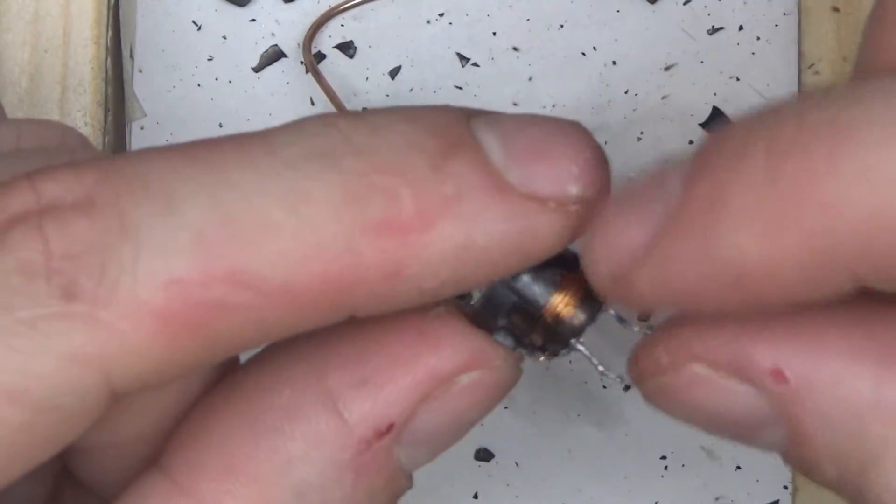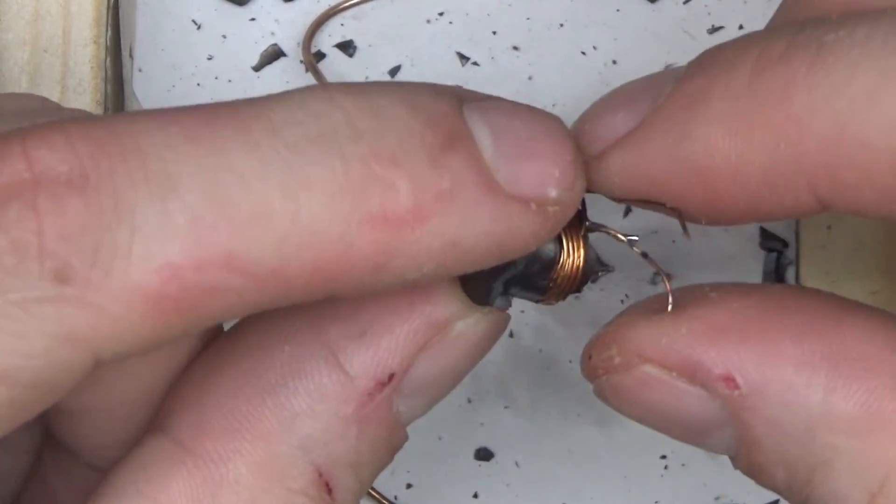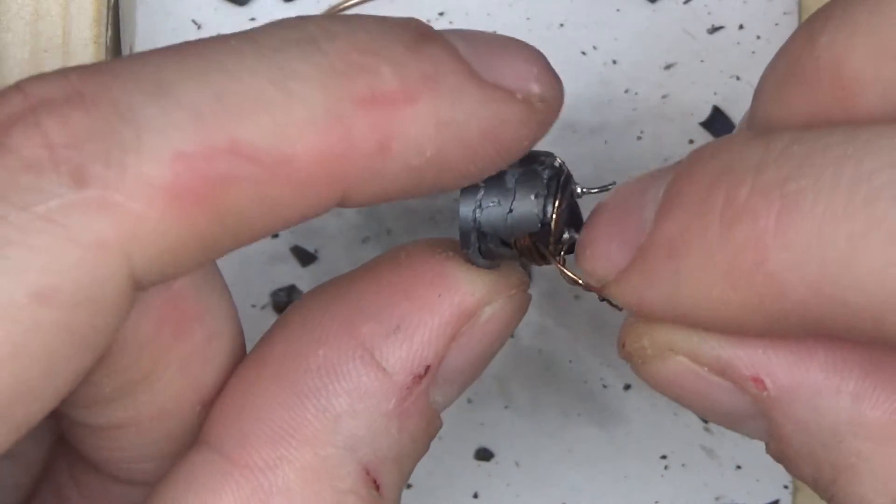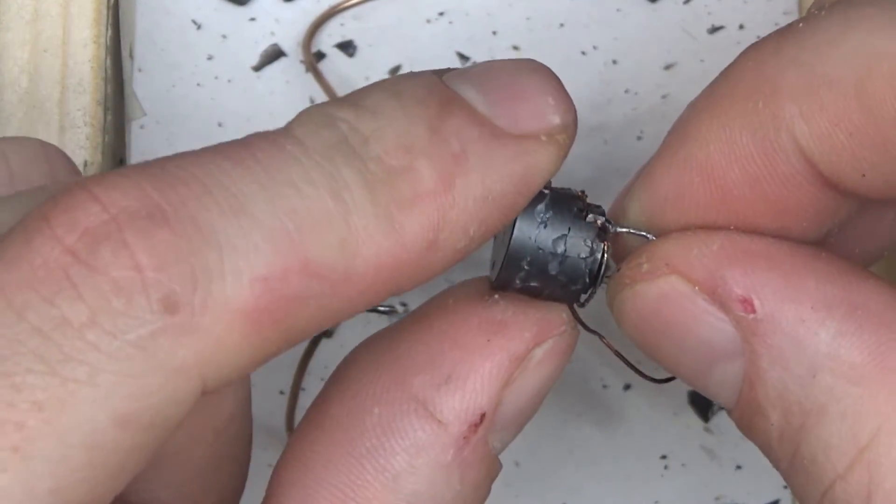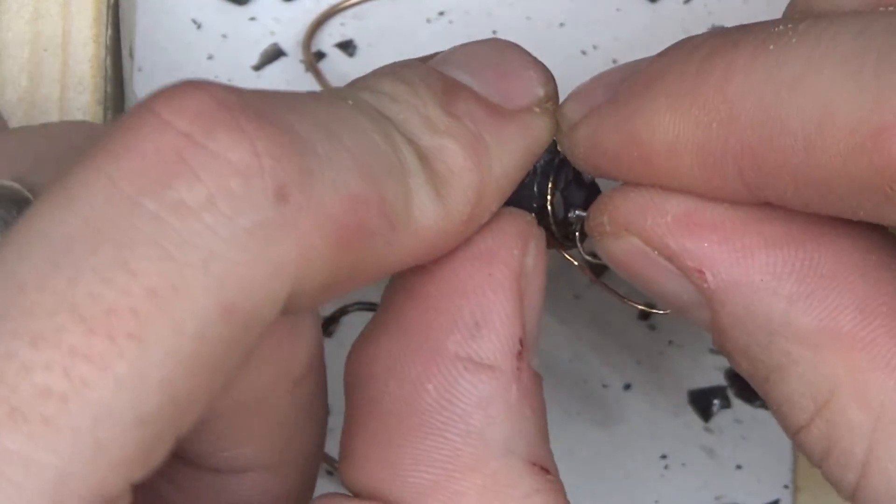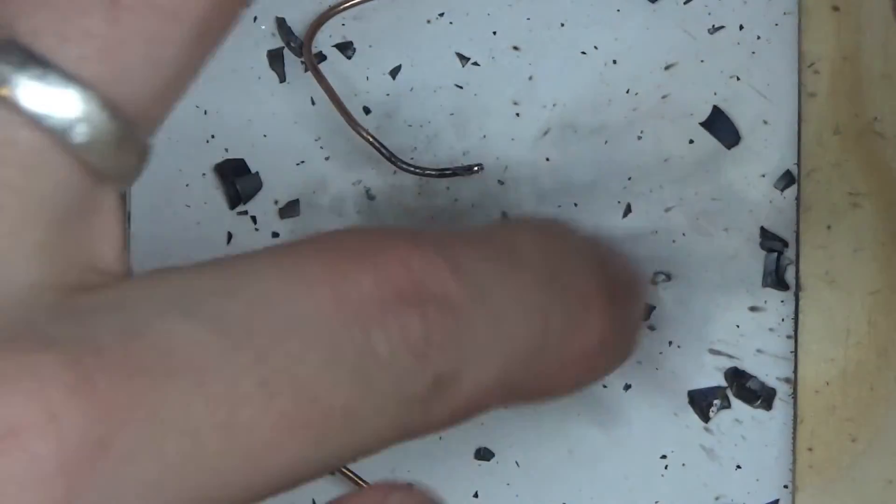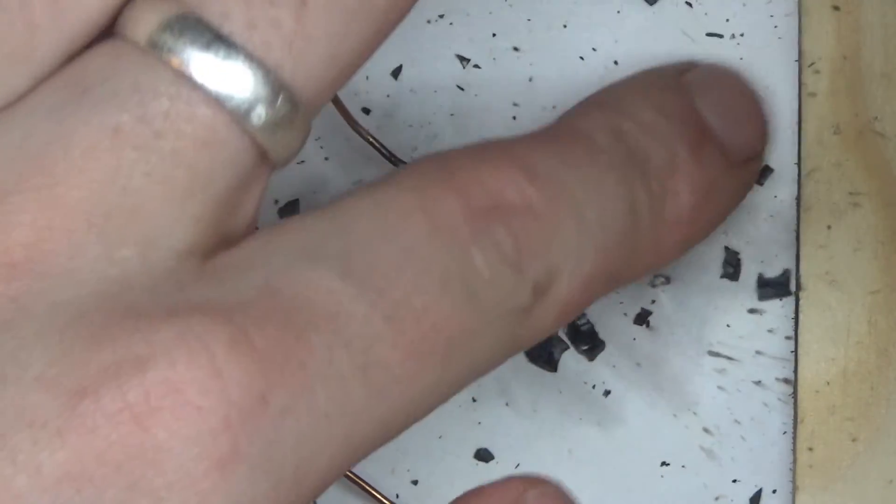As you can see, it blew up in many places. The wire unwound itself and it shattered the ferrite around it completely. All this debris is the ferrite that shattered into pieces.